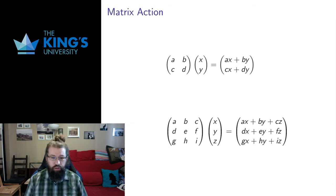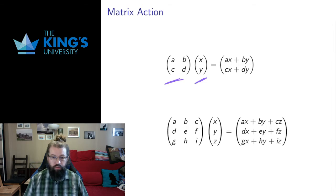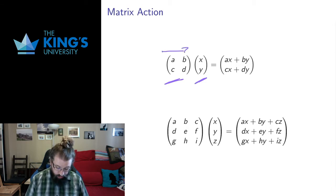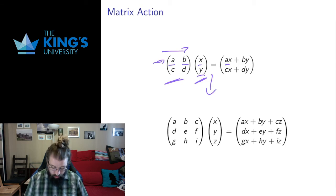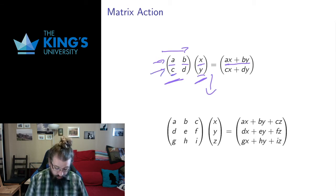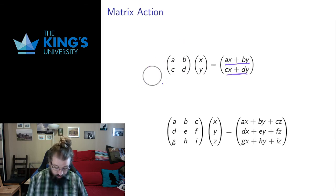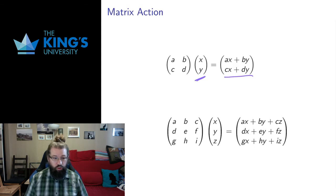I'm going to start in R2 and R3 to make this clear and then give the general form. For a 2×2 matrix acting on a vector, we always go across the rows of the matrix and down the vector. The first component of the output is A times X plus B times Y, and the second component is C times X plus D times Y. This takes some vector in R2 to some other vector in R2, and it turns out this action is linear and all linear transformations can be encoded this way.